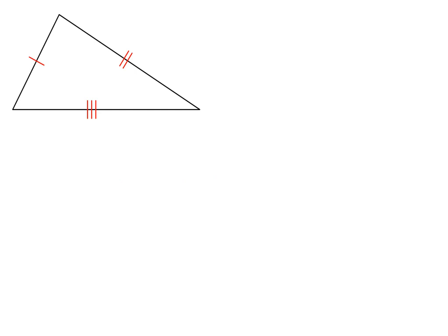If a triangle has no equal sides, we call it a scalene triangle. Please note, the angles are also all different in a scalene triangle.